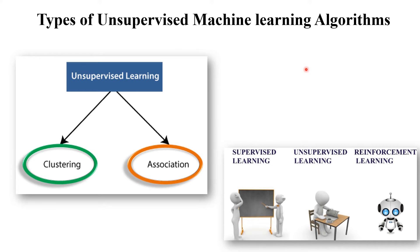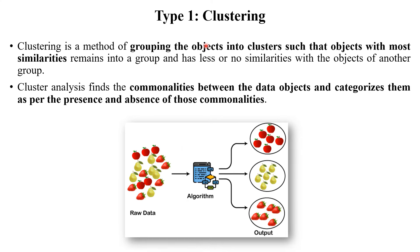There are two types of unsupervised machine learning algorithms: clustering and association. The first type is clustering. A cluster means a group of similar functionalities. Clustering is a method of grouping objects into clusters that have the most similarities. For example, given raw data with images of strawberries, apples, and lemons, the machine identifies features, patterns, and characteristics and clusters those images accordingly. Cluster analysis finds commonalities between data objects and categorizes them based on the presence or absence of those commonalities.